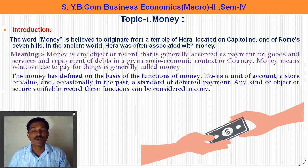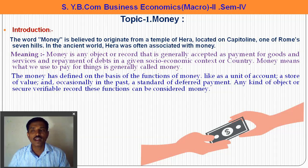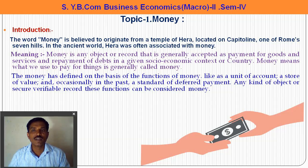Money has been defined on the basis of the functions of money. There are various functions of money like unit of account, store of value, and standard of deferred payment — used as a tool for repayment of old loans. Any kind of object, secured verifiable record fulfilling these functions can be considered money. So any object — metal or paper — which is generally accepted by everybody and used for transactions, store of value, and standard of deferred payment, is called money.